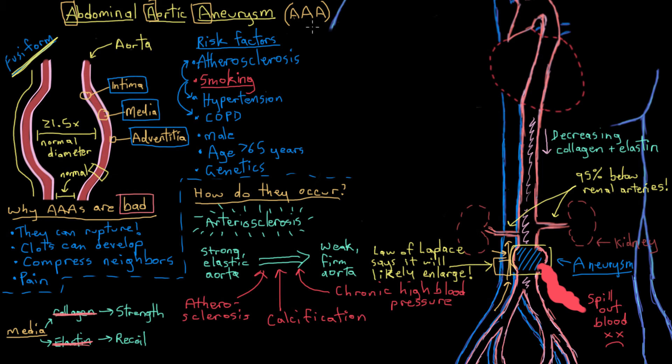How do you know if you have a AAA? Well, if you do have one, chances are you won't know about it, because most people with AAAs are asymptomatic. Most AAAs are either discovered incidentally on abdominal x-rays, during a routine physical exam sometimes, or unfortunately because of a rupture.